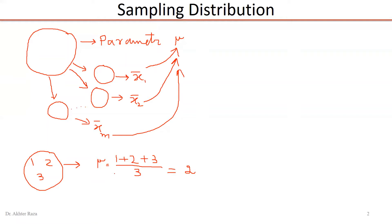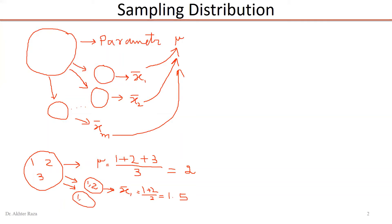If I am interested in obtaining a sample of size 2 — suppose 1 and 2 are the two values selected — the mean of the first sample is (1 + 2) / 2 = 1.5. Because the sample is randomly chosen, there is a possibility that 1 and 3 are selected instead. If 1 and 3 is selected, the mean of the second sample, x2-bar, is (1 + 3) / 2 = 2.